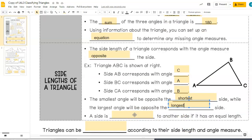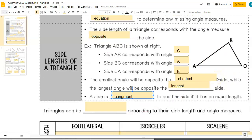A side is congruent to another side if it has equal length. So remember, congruent was our term for having the same measure. So if two sides have the same length, we're going to call them congruent.